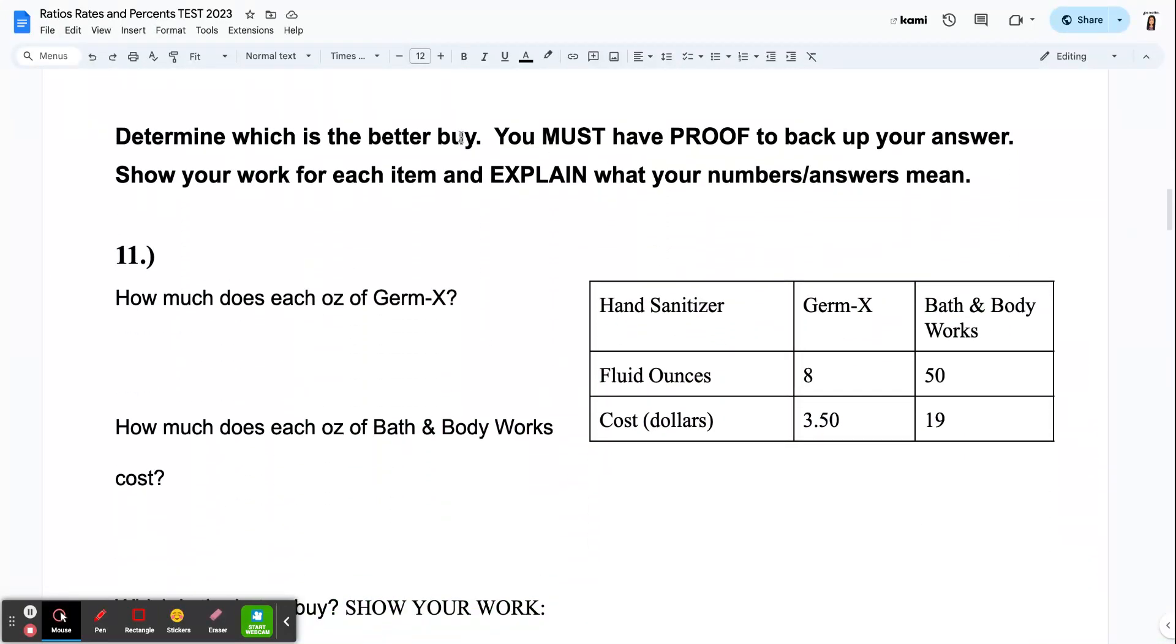Determine which is the better buy. You must have proof to back up your answer. So when I say you have to have proof, you can't just look down and be like, oh, I'm comparing Germ-X to Bath and Body Works. Germ-X is better because it's cheaper. That's not proof. Proof means mathematical work shown.